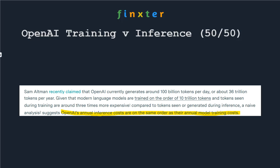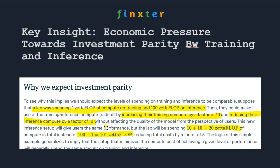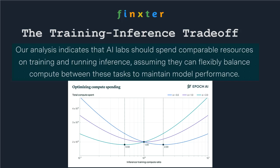The reason we see this balance everywhere in the real world is that we can trade training and inference against each other to reduce overall costs. Show me the incentive and I'll show you the outcome — the incentive is to reduce costs. Companies do so by manipulating this trade-off, and we see the resulting balanced end state in all real-world scenarios. All major AI companies more or less adhere to this trade-off.